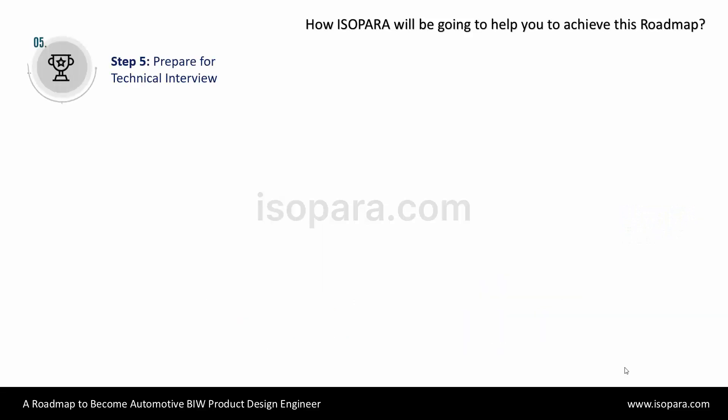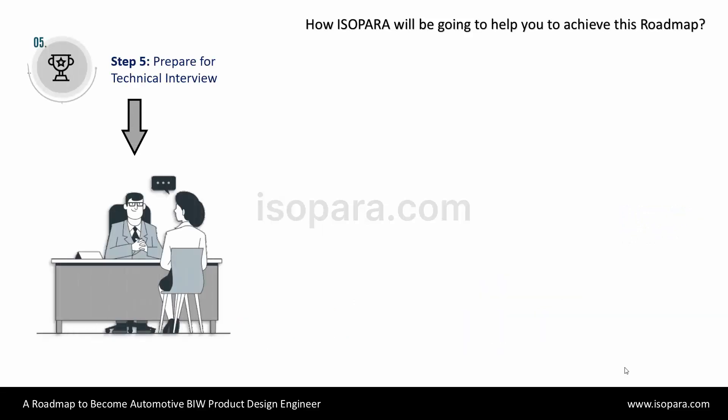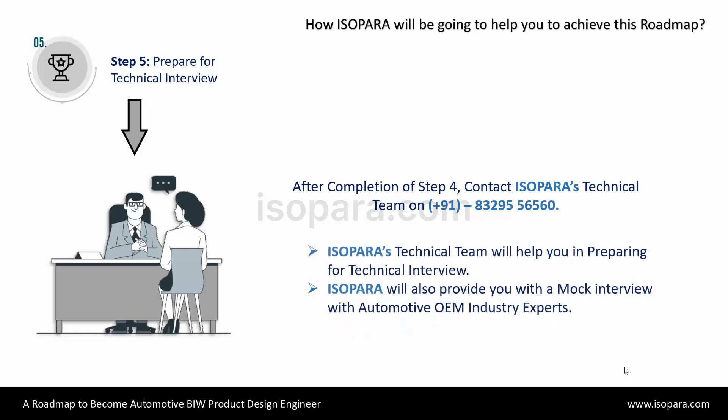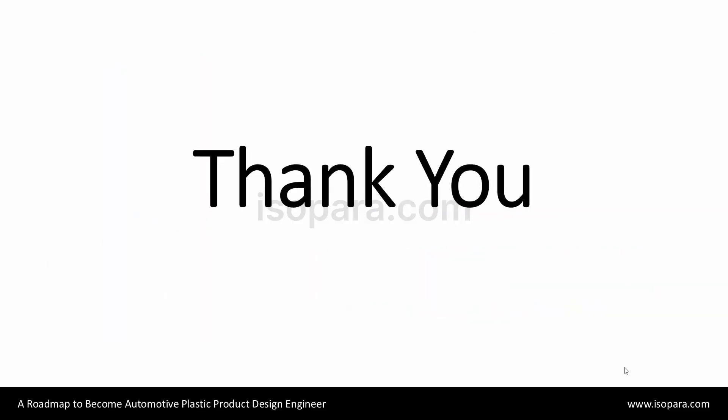The last step is Step 5. For this step, give a call to the technical team of iSopara on the given number — only after the completion of Step 4. iSopara's technical team will help you in preparing for the technical interview. Also, iSopara will provide you with a mock interview with automotive OEM industry experts. This is how iSopara will help you to achieve these steps and become an automotive design engineer. To discuss more, feel free to contact the technical team. Thank you.